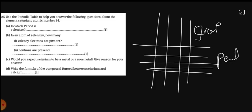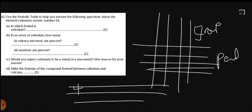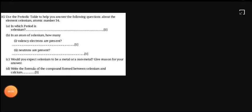So look at selenium. Selenium is actually in period 4 of the Periodic Table. So it's in period 4 of the Periodic Table. So part A says it's in period 4.